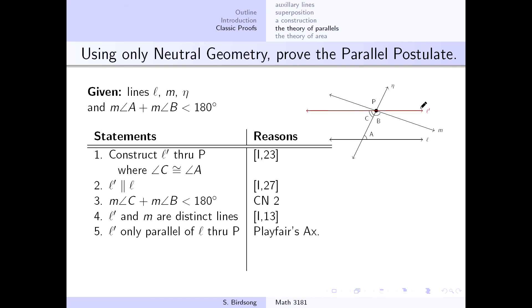because Playfair's axiom says you have at most one parallel line, or one line that's parallel to your given line through a point. Well, both L prime and M contain the point P or intersect at the point P, which means the only line that's going to be parallel to L through the point P is L prime.